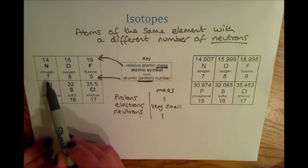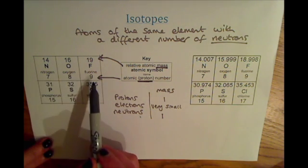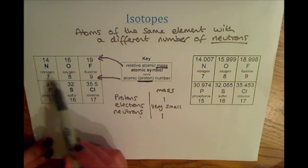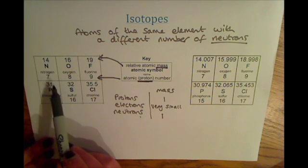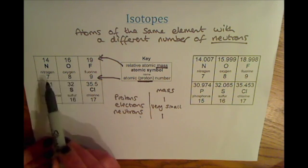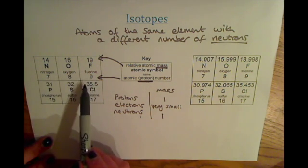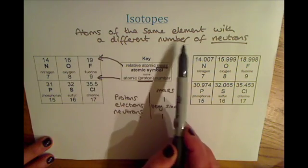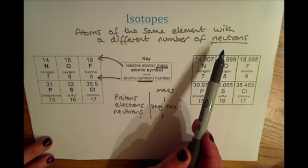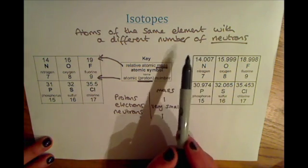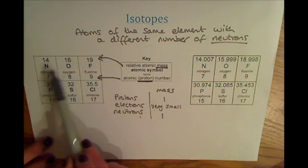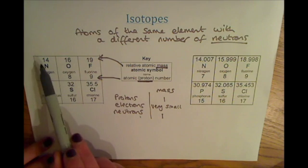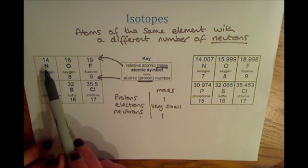Each element has a different proton number, so if you increase the mass by increasing the number of protons you're changing the element. An isotope, however, changes the number of neutrons, and that means the mass — these top numbers — will be different between different isotopes.